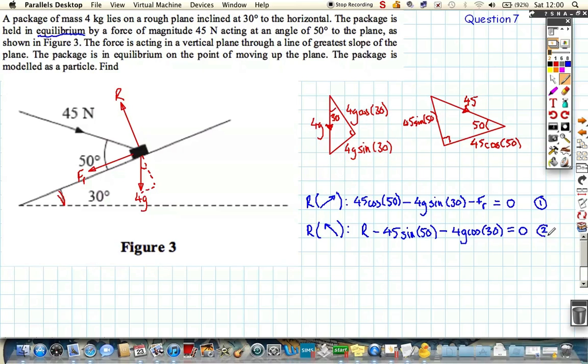Just before we proceed, we need to remember something: we don't know what the coefficient of friction is, and we also should know because it's in limited equilibrium, so on the point of moving, Fmax or Fr is equal to μR. So the friction, the maximum value of friction which Fr will be, is equal to coefficient of friction multiplied by the reaction force. We've not actually answered the question yet, but this is actually going to be really helpful for us to answer the questions, and you'll see why in just a sec.